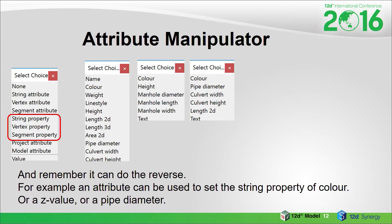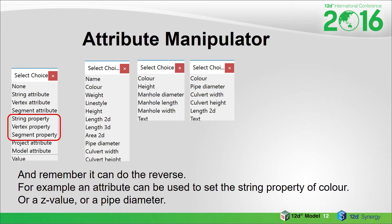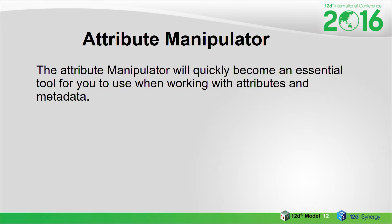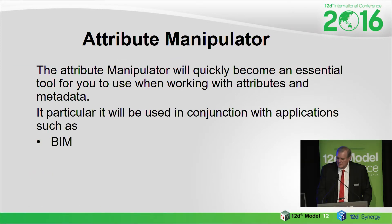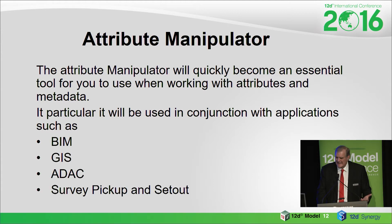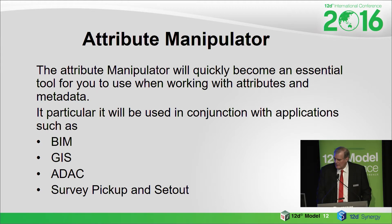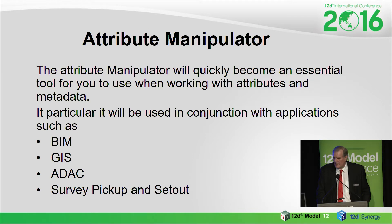So it's a two-way street — that's the main thing about it. If you're into attributes, which everyone is these days, it'll allow you to do lots and lots of things. You'll find it very quickly — you use all sorts of applications with attributes: BIM, GIS, ADAC, and so on. And a lot in survey pick-up and set-out — a lot of attributes now being used by our surveyor friends. So it's essential. It might come from those systems as just a dumb list of attributes, and you can use Manipulator to put it any way you wish.